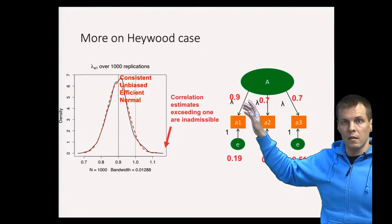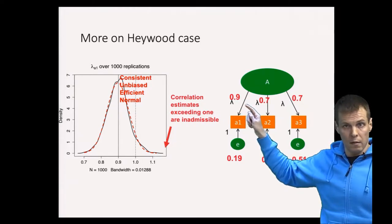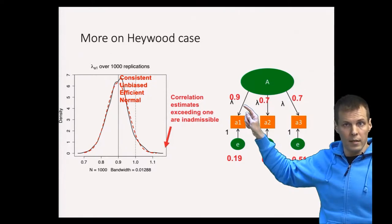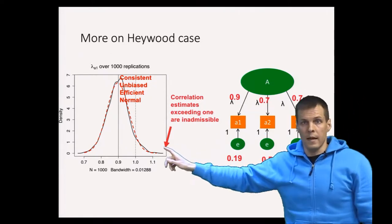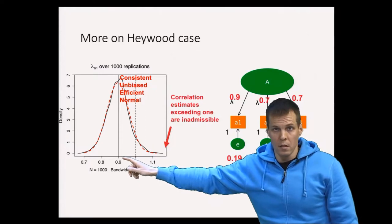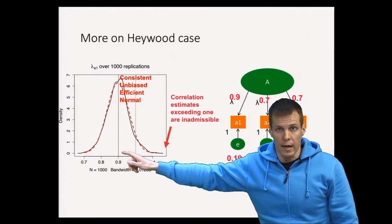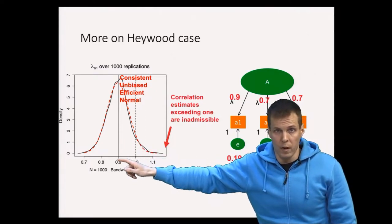If we estimate this factor loading that has that real value of 0.9 many many times and we have an unbiased estimator then the estimates are correct on average. So the estimates are centered around the correct population value 0.9.